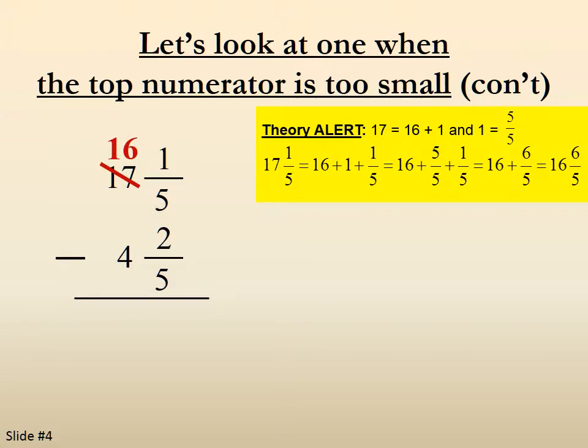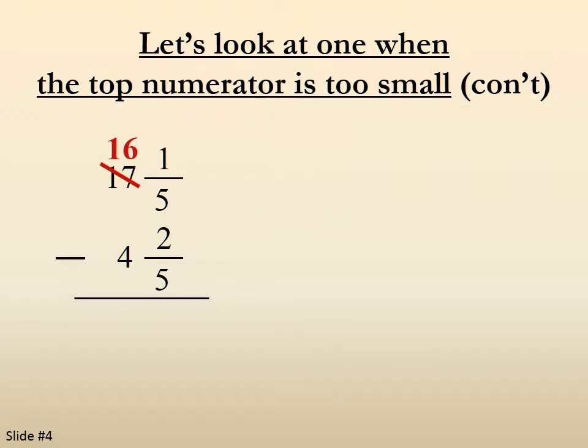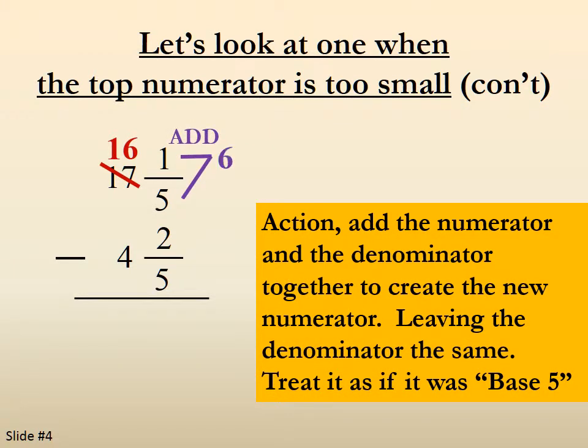In reality, what you're most likely going to do is borrow one from the 17 to make it 16. Then you're going to add the denominator to the numerator to make your new numerator. Because when we borrowed with regular numbers, we want to treat our denominator as if it was the base. So that's what you add.